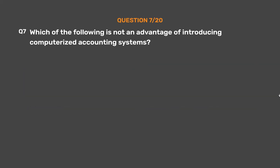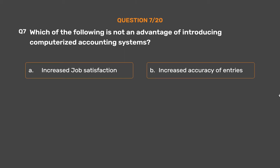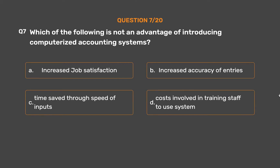Question number 7. Which of the following is not an advantage of introducing computerized accounting systems? Option A: Increased job satisfaction. Option B: Increased accuracy of entries. Option C: Time saved through speed of inputs. Option D: Costs involved in training staff to use the system. The correct answer is Option D: Costs involved in training staff to use the system.